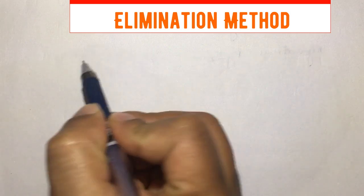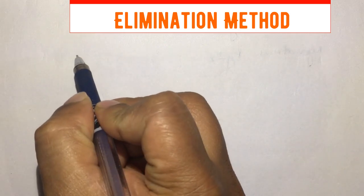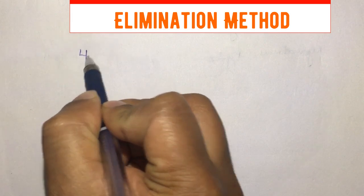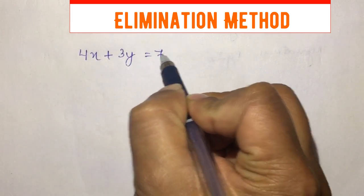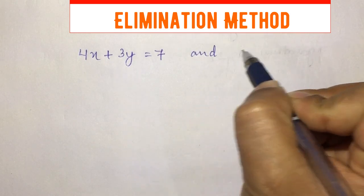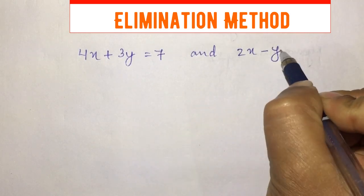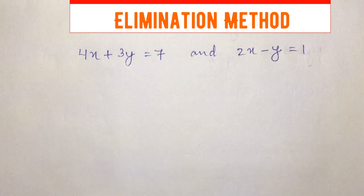So let us consider a pair of linear equations: 4x plus 3y equals 7 and 2x minus y equals 1. So there are two equations which we have to solve using elimination method.